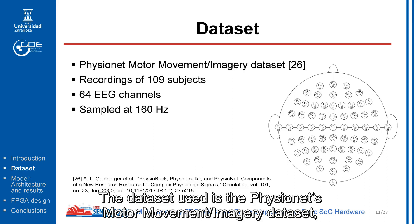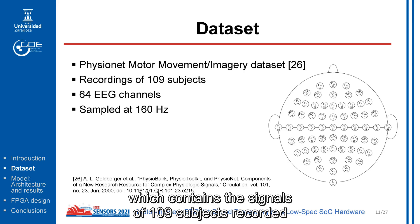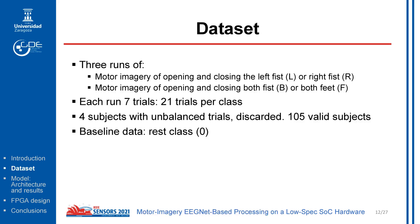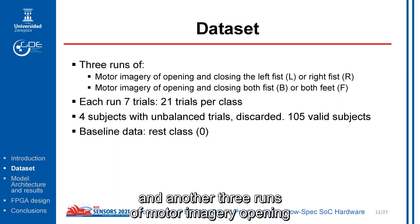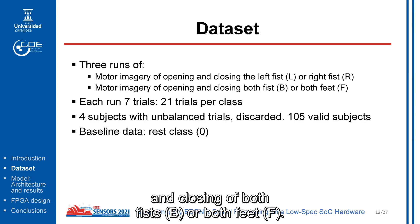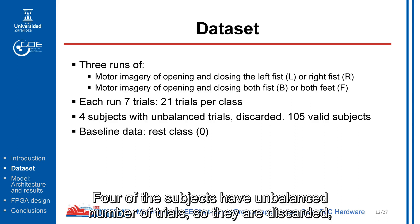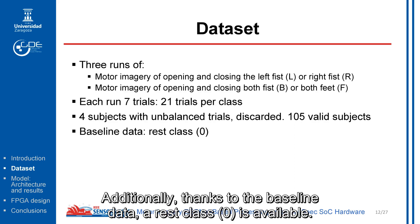The dataset used is the Physionet's motor movement imagery dataset, which contains the signals of 109 subjects recorded using an EEG cap of 64 electrodes sampled at 160 Hz. It is composed of three rounds of motor imagery of opening and closing the left fist (L) or the right fist (R), and another three rounds of motor imagery of opening and closing both fists (B) or both feet (F). Each round has seven trials, so a total of 21 trials per class are recorded. Further subjects have an unbalanced number of trials, so they are discarded, thus resulting in 105 valid subjects. Additionally, from the baseline data, a rest class (0) is also available.